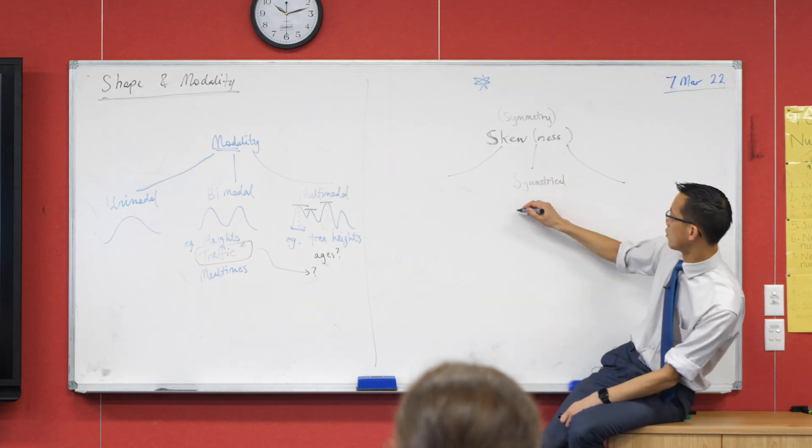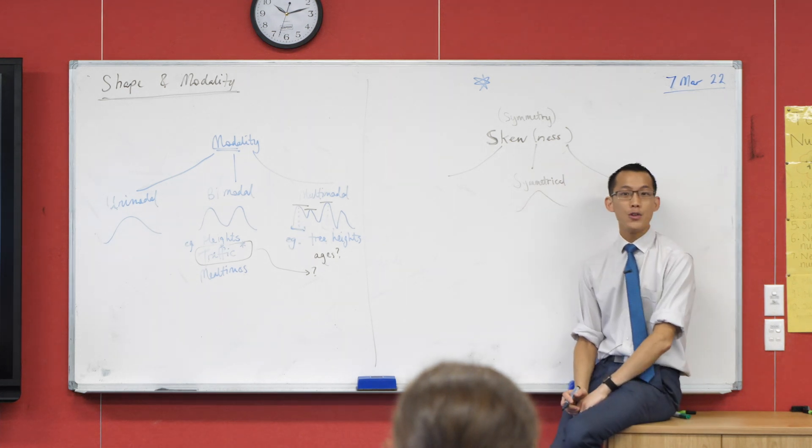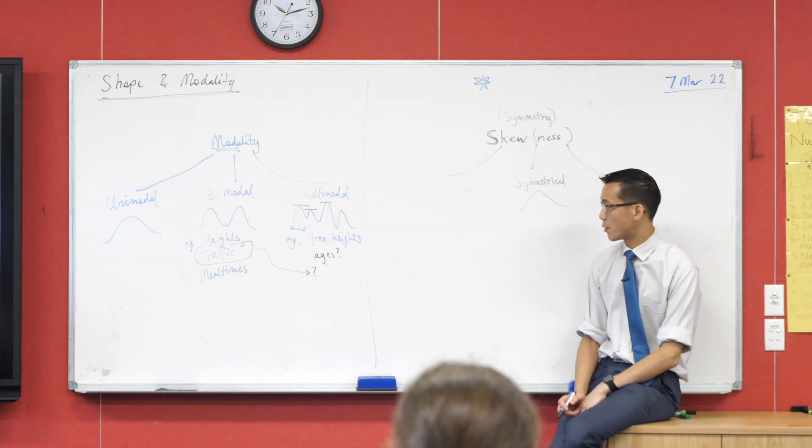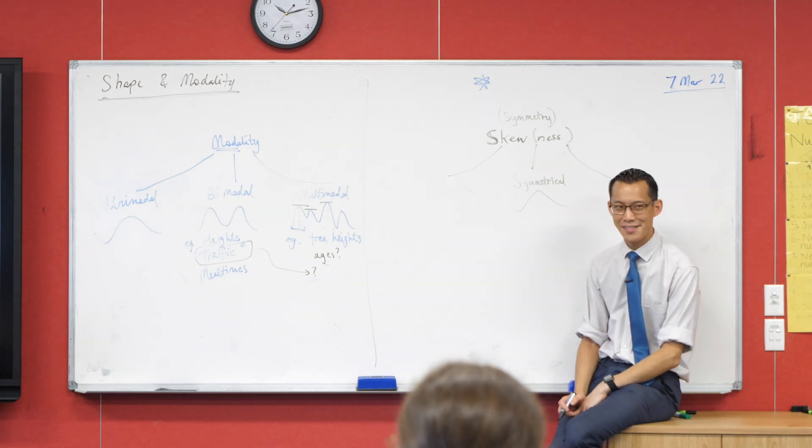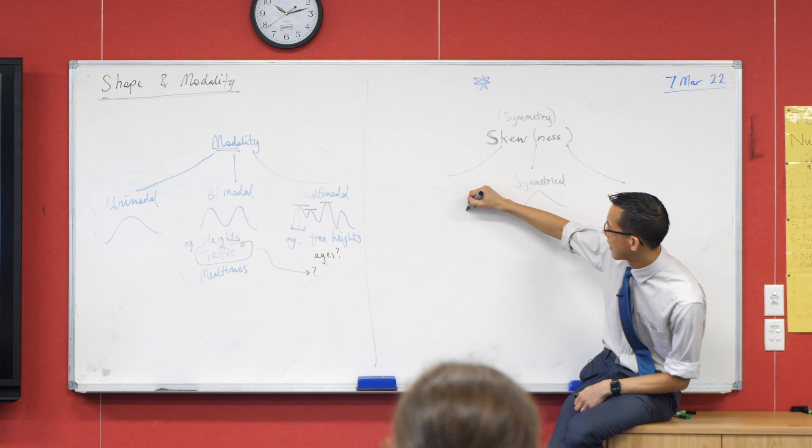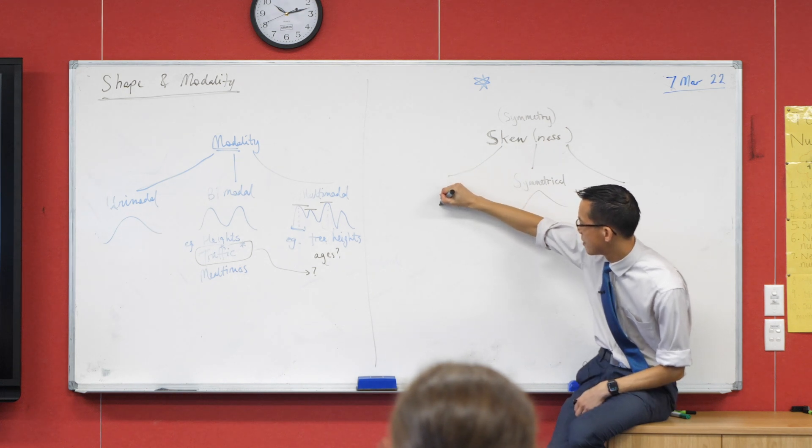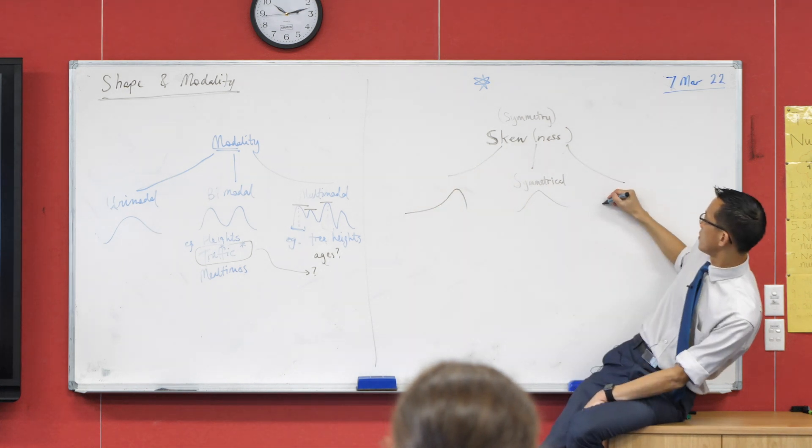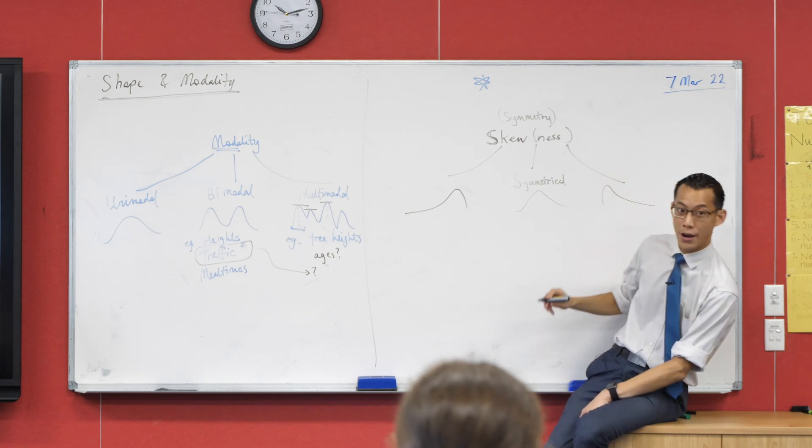Now then you have two other kinds of skewness that we're interested in. You have to be really careful in how you draw them. I'm going to draw one like this. So there's a hump here and then there's a long tail going that way. And then I've got another one here where there's a hump here and a long tail going that way.